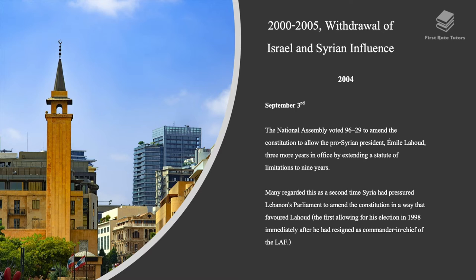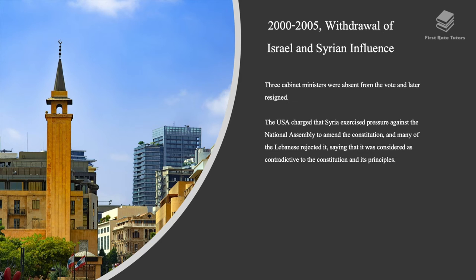On September 3rd, 2004, the National Assembly voted to amend the constitution to allow the pro-Syrian president Emile Lahoud three more years in office by extending the term limit to nine years. Many regarded this as the second time Syria had pressured Lebanon's parliament to amend the constitution in a way that favored Lahoud. Three cabinet ministers were absent from the vote and later resigned. The USA charged that Syria exercised pressure against the National Assembly to amend the constitution, and many Lebanese rejected it as contradictory to the constitution and its principles.